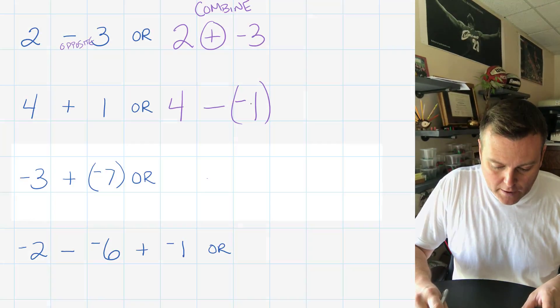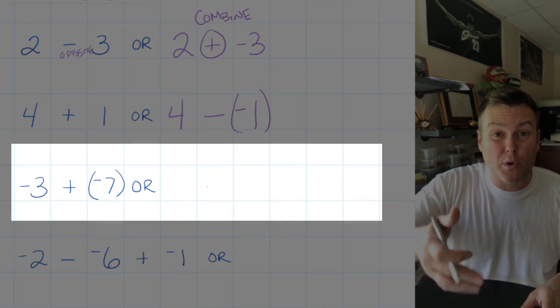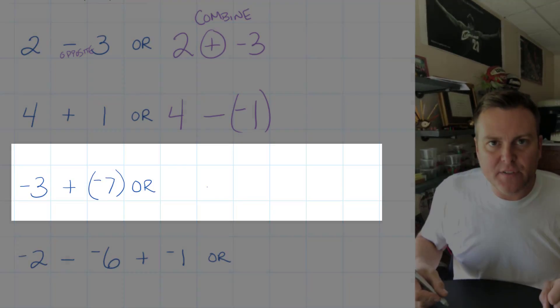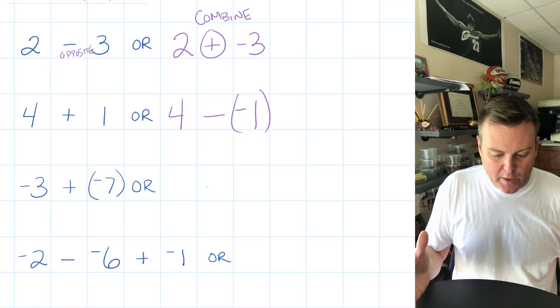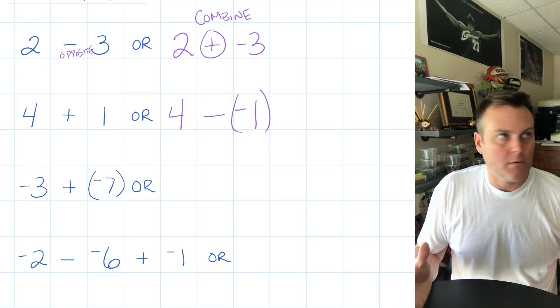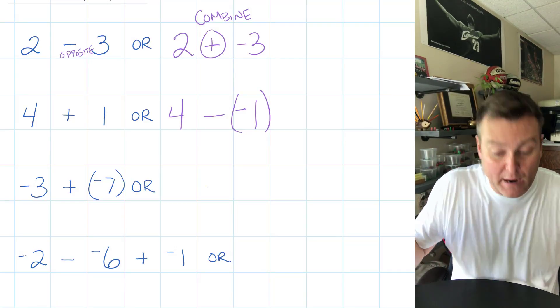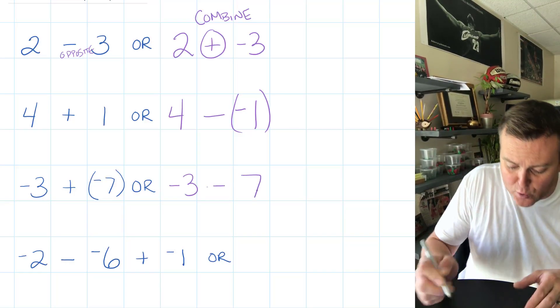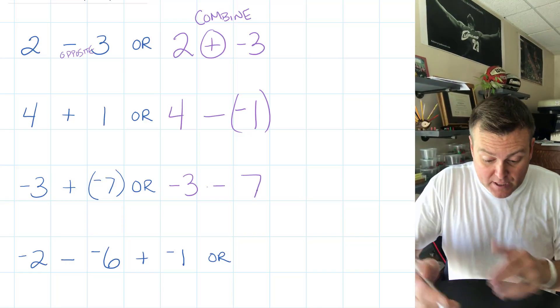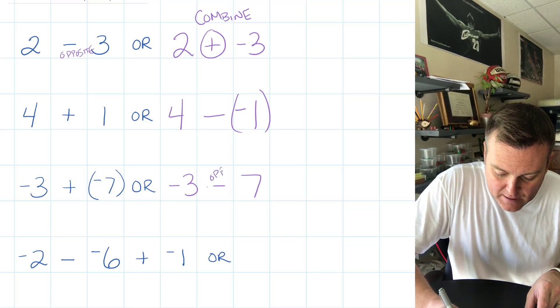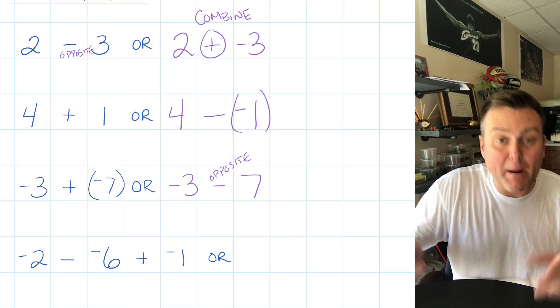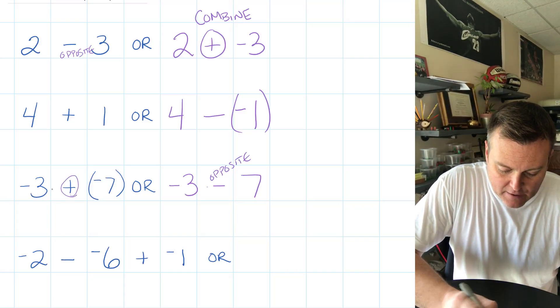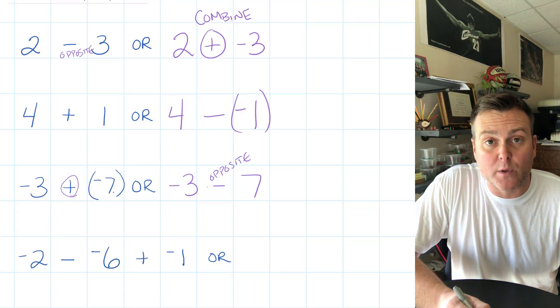Next one: -3 + (-7), or combined with negative seven. How can we rewrite that as a subtraction problem? Negative three minus seven. Just like we got in the first one where there was that opposite, we want negative three and the opposite of positive seven.